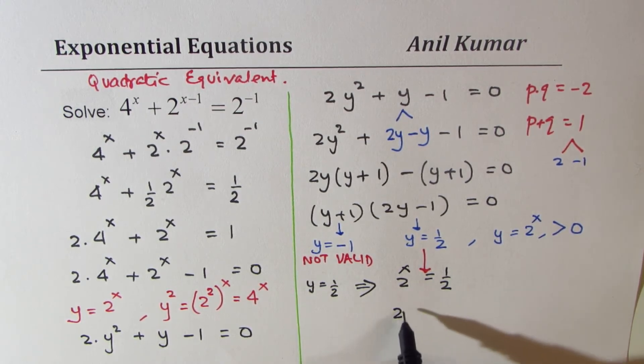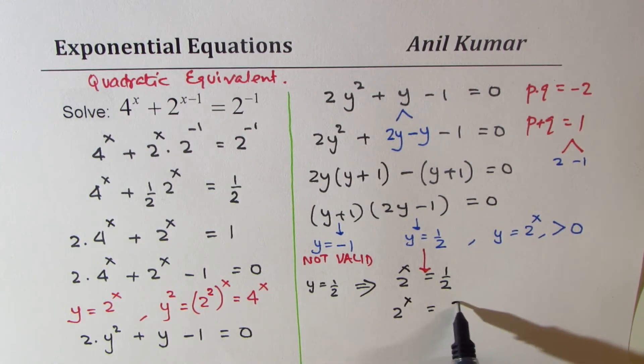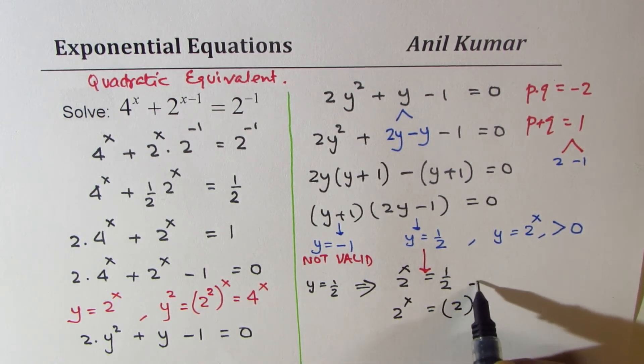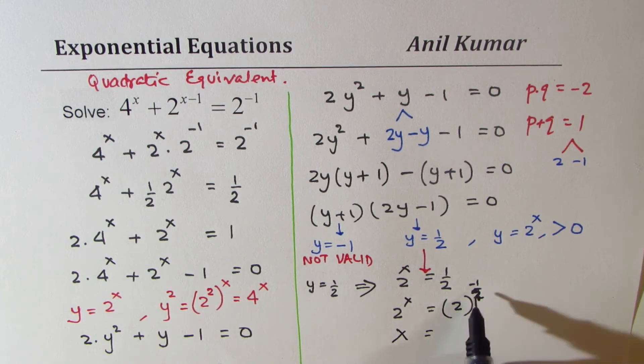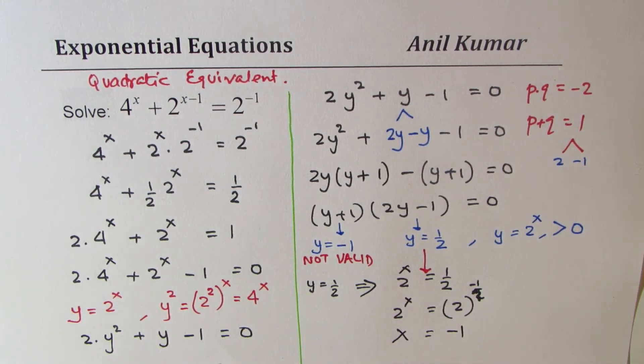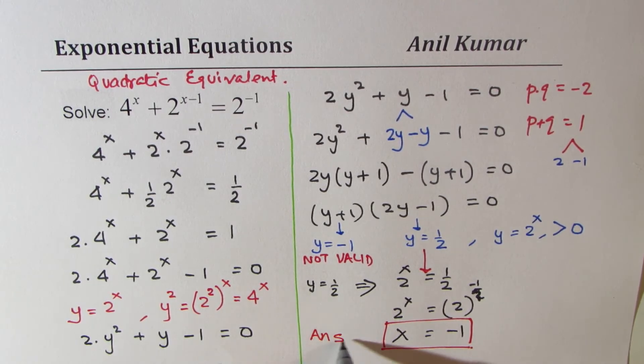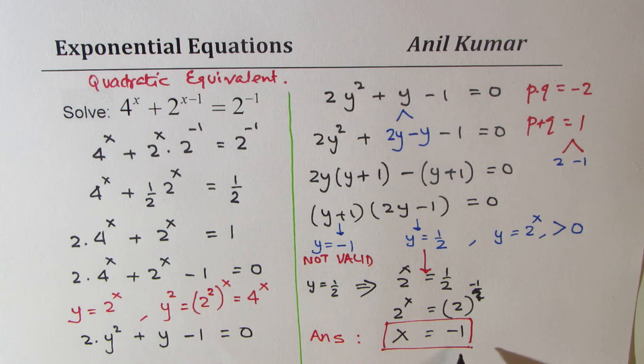So, or you could write 2 to the power of x is 2 to the power of minus 1. Half is 2 to the power of minus 1. That is half. So from here, we get x equals minus 1 as our answer. So the solution is x equals minus 1. That becomes the solution for the given equation. So our answer is x equals minus 1.